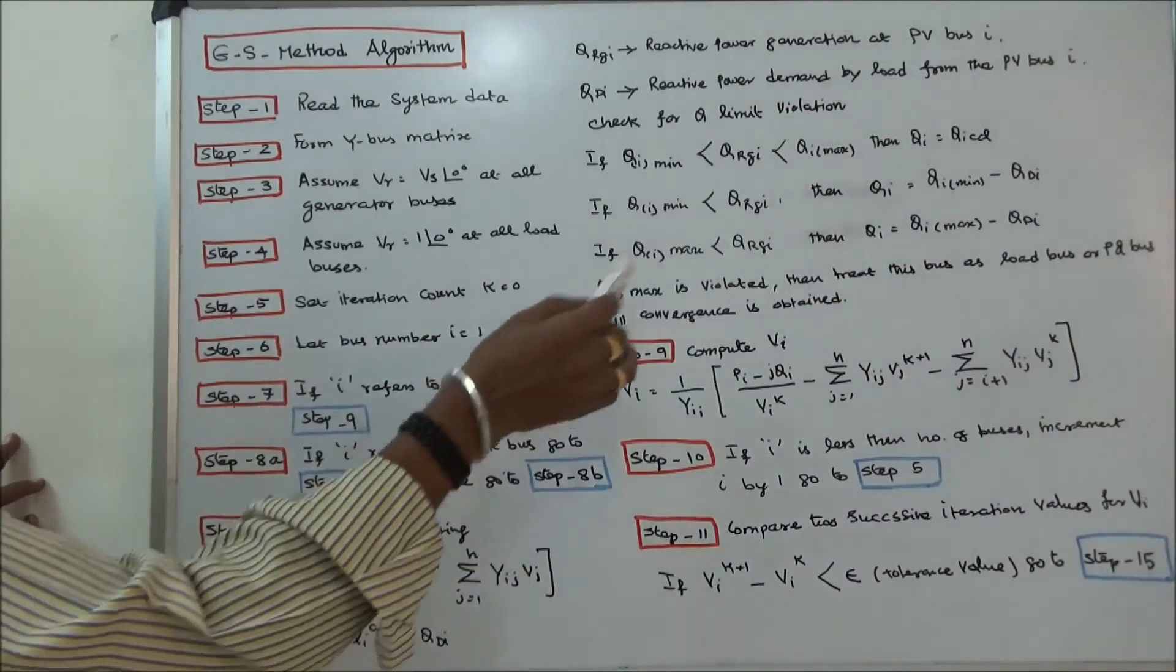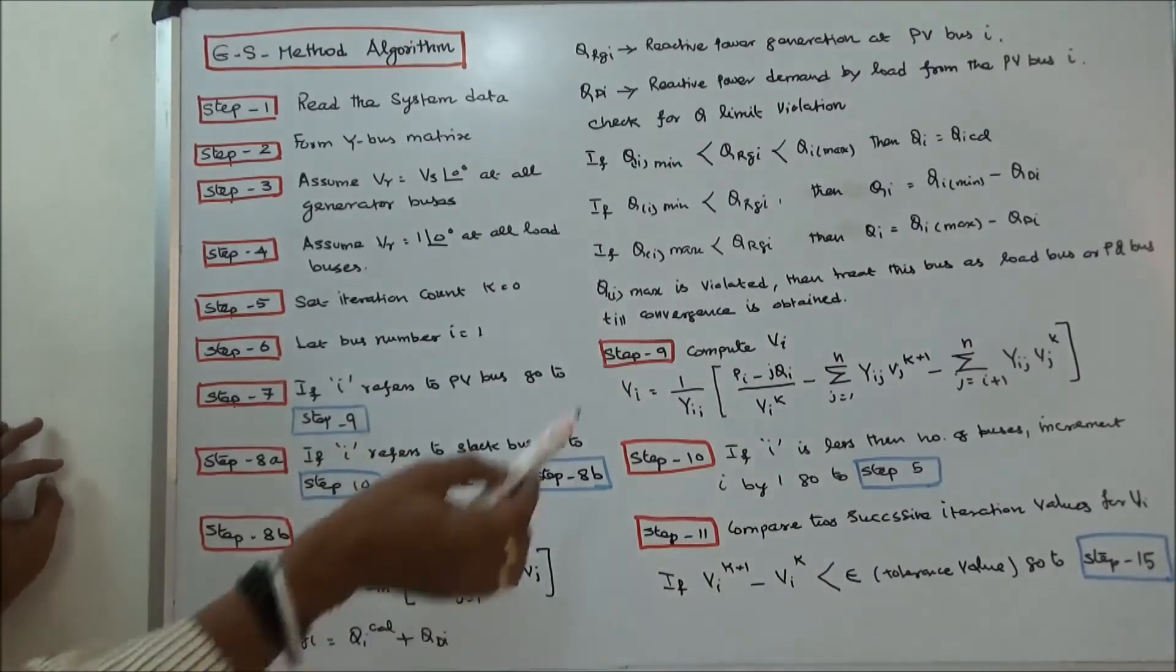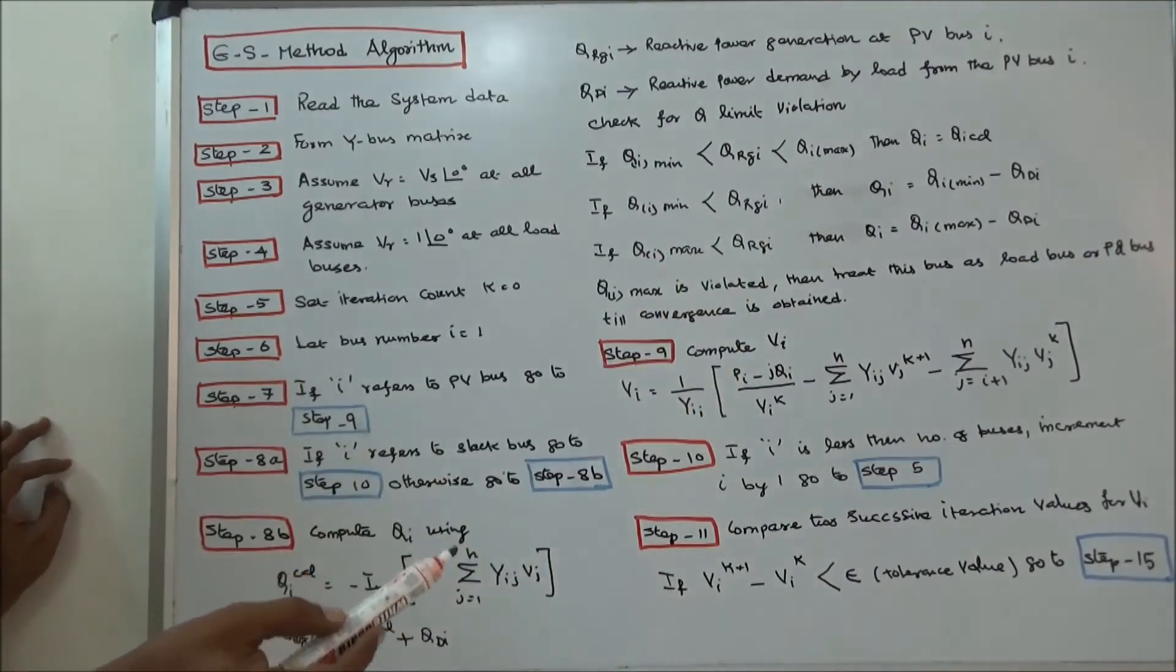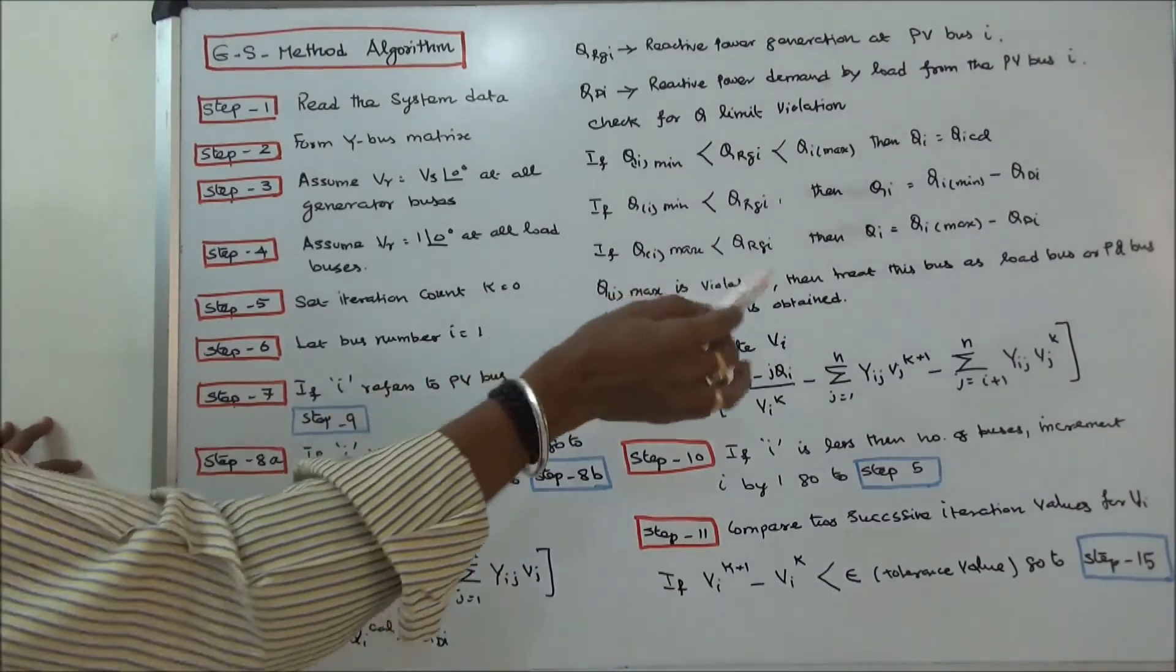If QI maximum is violated, then treat this bus as load bus or PQ bus till convergence is obtained.